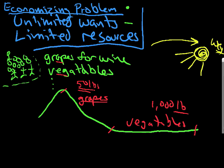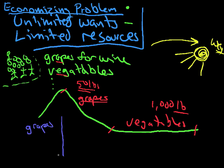Here's the issue with the economizing problem though. They don't just grow all the grapes up here and all the vegetables down there — they have to decide how many vegetables and how many grapes to grow. What economists do with the production possibilities curve is say, these people have to decide how many grapes to grow. So you take a chart here, going from zero to 10,000 pounds of grapes, and then how many vegetables — say zero to 10,000 here.